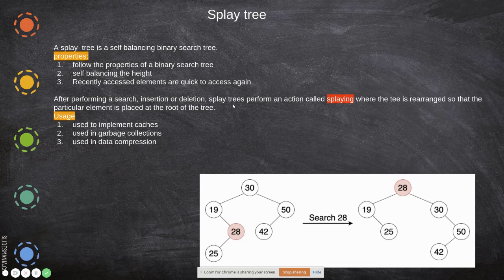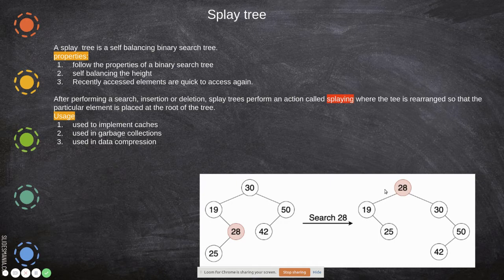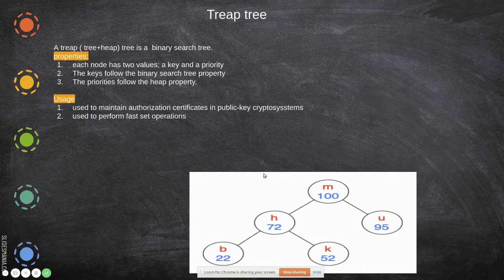After performing a search or insertion, a splay operation is performed where the accessed element is placed at the root of the tree. If there is a loop accessing the same elements again and again, those elements will be placed near the top so they are accessed from cache quickly. Splay trees are used in garbage collection and data compression.